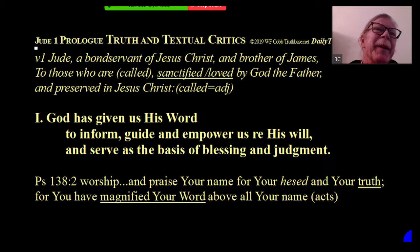Vaticanus and Sinaiticus disagree with each other over 3,000 times in the Gospels alone. So you have these two texts that are supposedly really authentic, and just in Matthew, Mark, Luke, and John, there are 3,000 times where they disagree. How could anyone in their right mind say this is the right text? Maybe they aren't in their right mind.